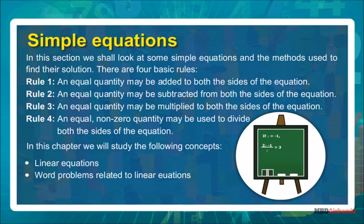Rule 1: An equal quantity may be added to both sides of the equation. Rule 2: An equal quantity may be subtracted from both sides of the equation. Rule 3: An equal quantity may be multiplied to both sides of the equation. Rule 4: An equal non-zero quantity may be used to divide both sides of the equation.